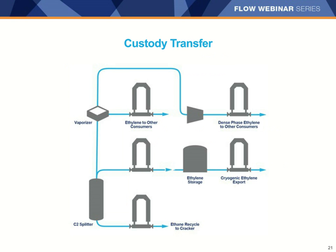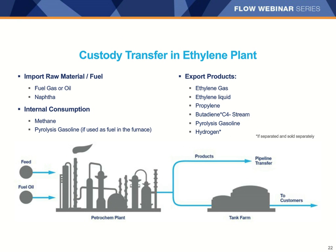The other application example for ethylene that we will talk about today is regarding custody transfer points. These may include raw materials or final products. There are several custody transfer points in an ethylene plant, from the raw materials and fuels coming in to the final products leaving the plant — accurate measurement is important for all of these buying and selling points. There are also internal consumption points that can be custody transfer applications, like methane or py gas purchased from another part of the process. Many final products get sold, including propylene and ethylene — which can be found in the gas phase, dense phase, or liquid. Each of these streams represents value, and getting accurate measurements may be worth a lot more than you think.